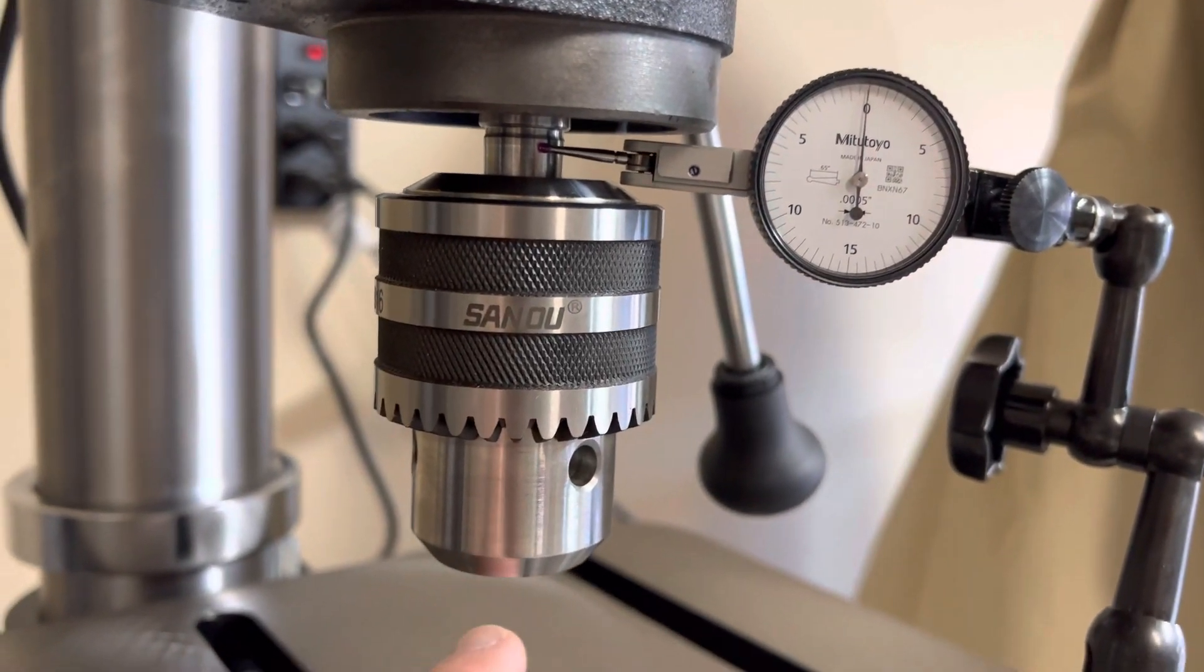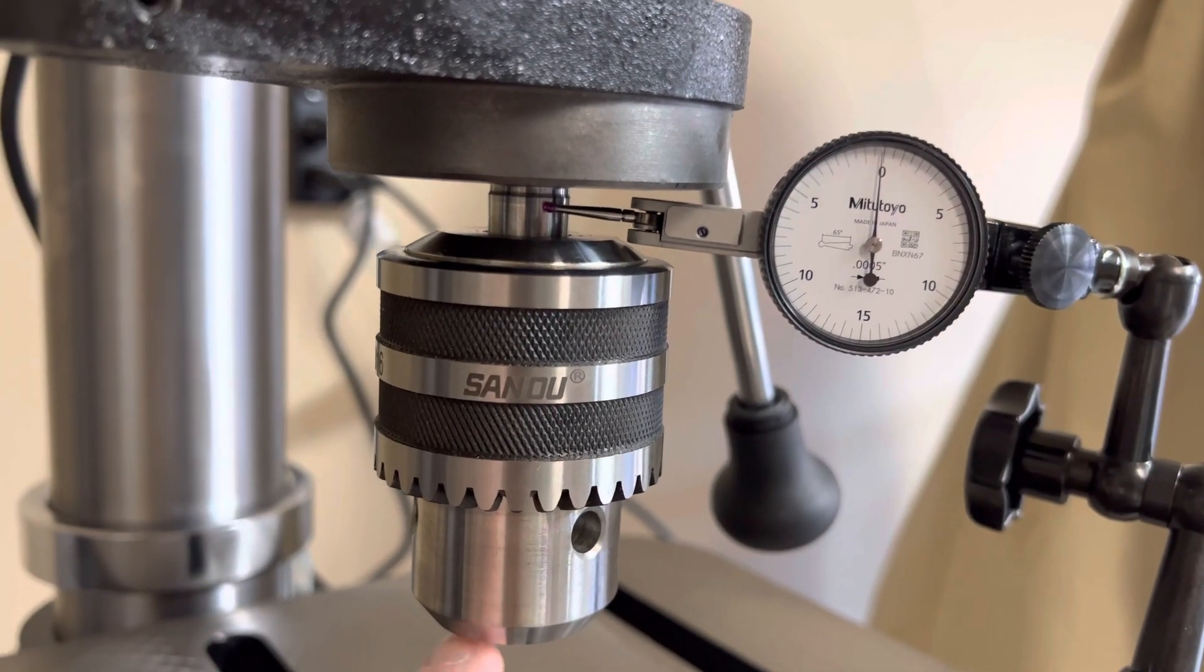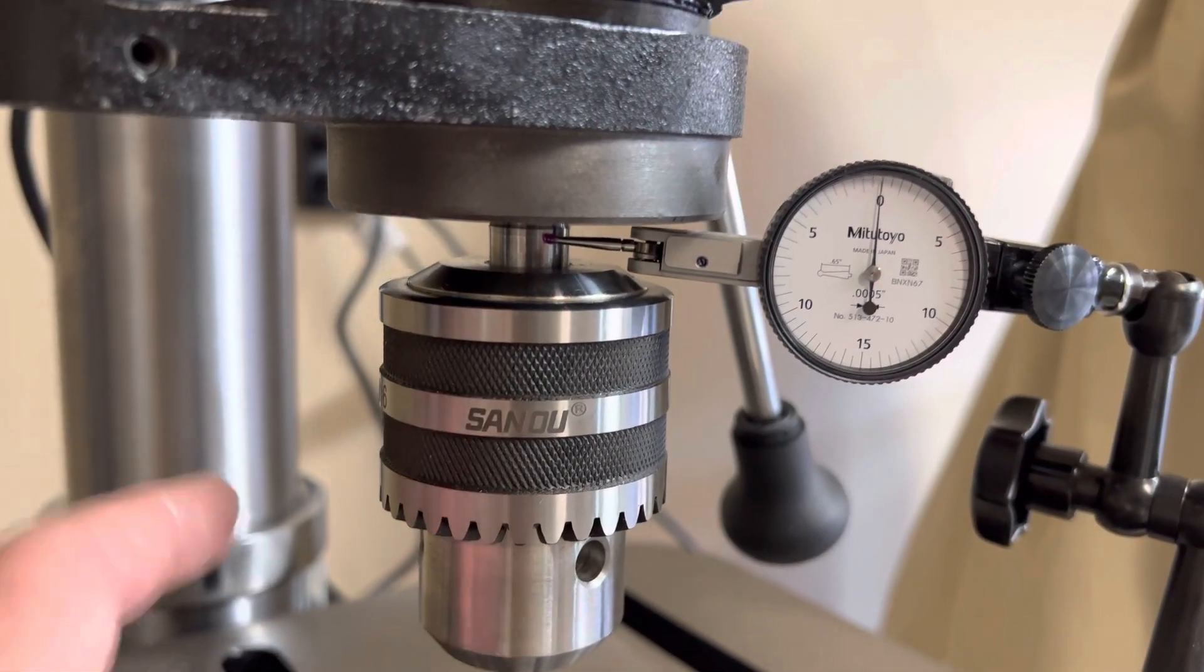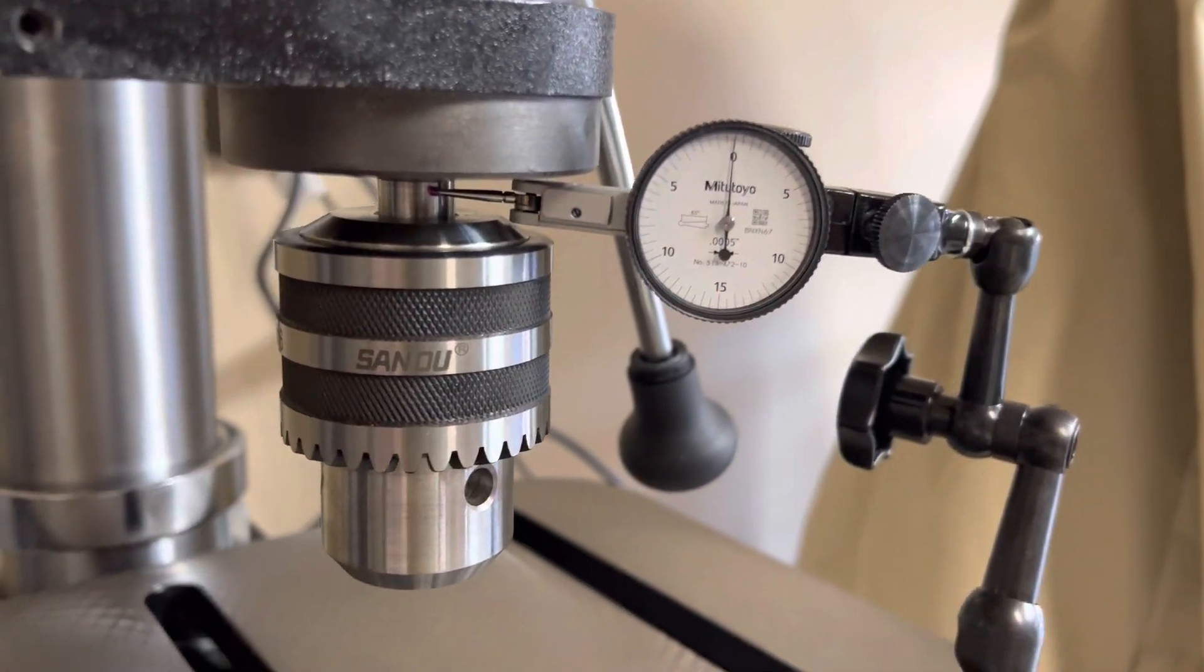I measured run out on a half inch drill bit in the chuck. It was about seven thousandths, but you could noticeably see the chuck moving around a little bit.